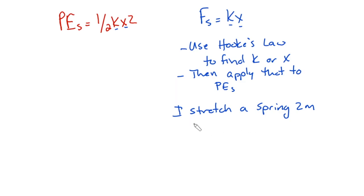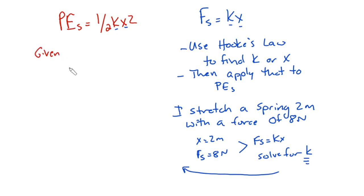For example, I stretch a spring 2 meters with a force of 8 Newtons. So now I see that X is going to be equal to 2 meters. And if this situation is in equilibrium, then the Fs is going to be 8 Newtons. So with these two pieces of information, I can solve now for K. And once I do that, I can take this K now over to here and say, well, if I know given that X equals 2 meters and I found K using Hooke's Law, now I can solve for PEs.